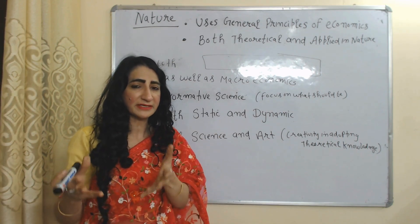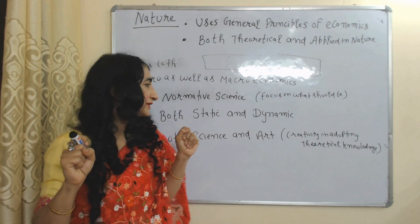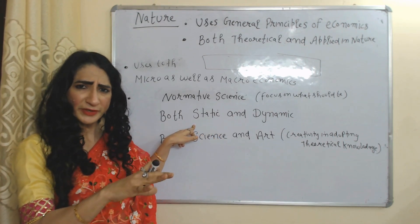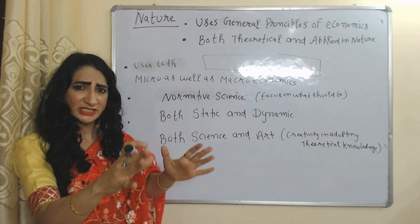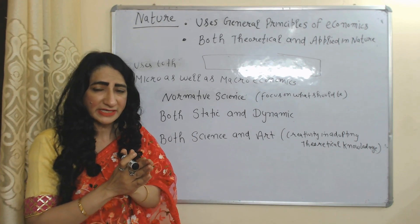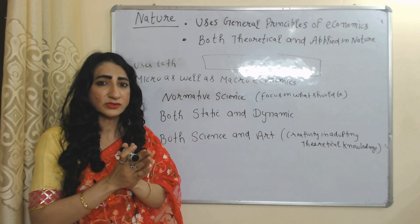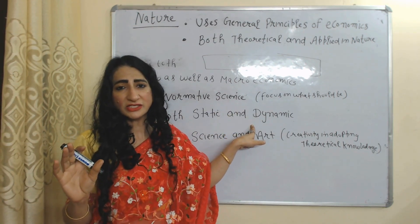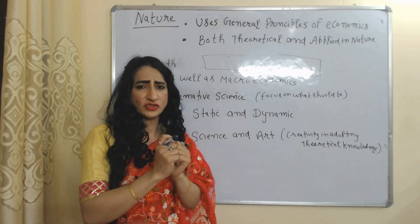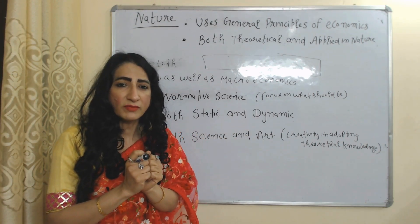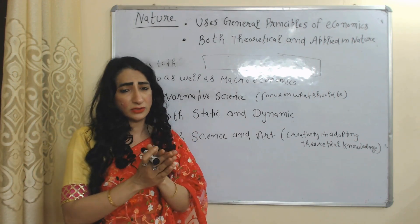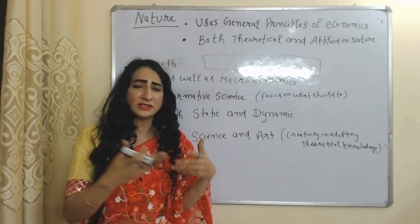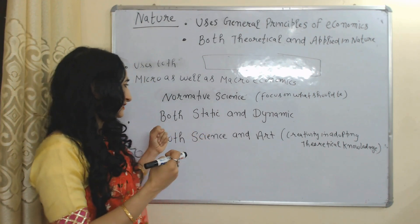Agricultural economics is both static and dynamic. Static means fixed or constant — agricultural economics is static because it analyzes situations where all factors of production are fixed. It is also dynamic in nature — dynamic means continuously changing — and agricultural economics analyzes situations where weather, prices, and even government policies are continuously changing.